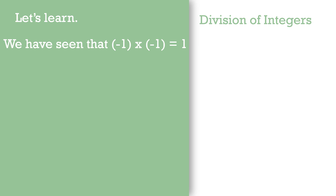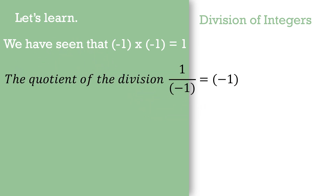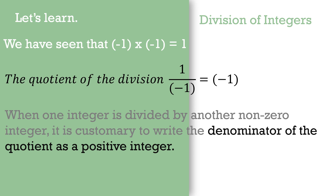We have seen that negative multiplied by negative is positive — for example, minus 1 multiplied by minus 1 equals positive 1. In division, if both sides of this equation are divided by minus 1, we get minus 1 equals 1 upon minus 1. Therefore, the quotient of 1 divided by minus 1 is minus 1. When one integer is divided by another non-zero integer, it is customary to write the denominator of the quotient as a positive integer.